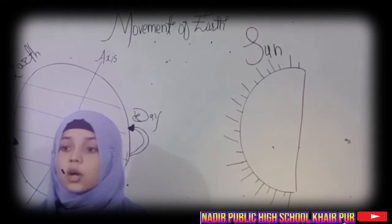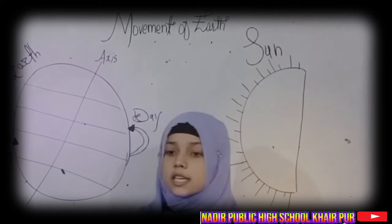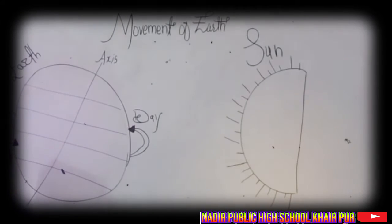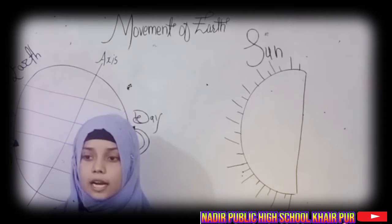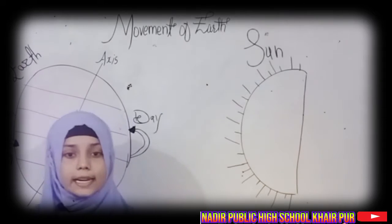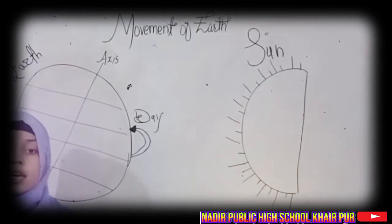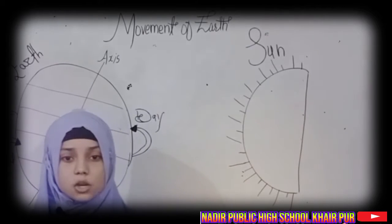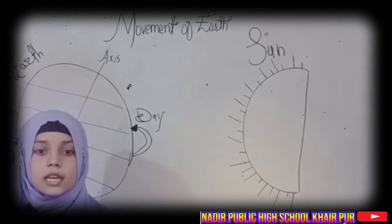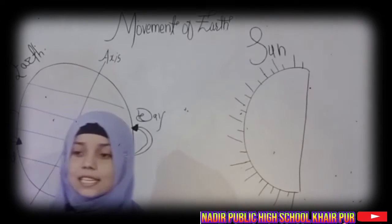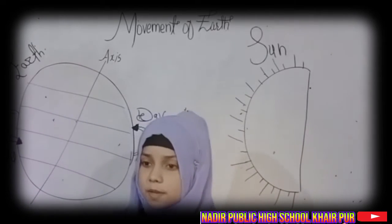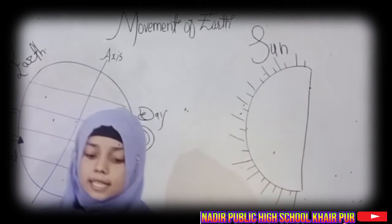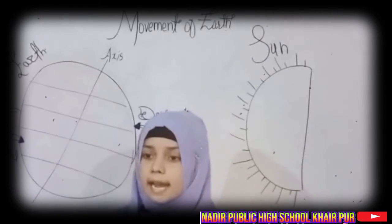The earth receives light from the sun. Due to the spherical shape of the earth, only half of the earth gets light from the sun at a time. The portion receiving sunlight experiences day, while the other half experiences night.